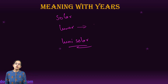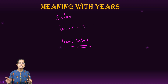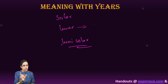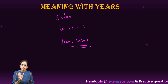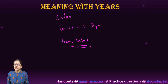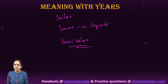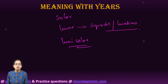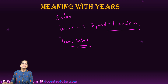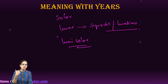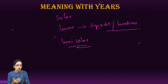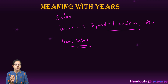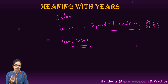In a lunar year, the year is divided into lunar months, also known as 12 lunations or synodic months. Each lunar month usually consists of 29.2 to 29.8 days, making it smaller than the Gregorian calendar month.